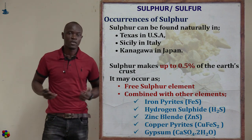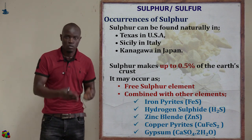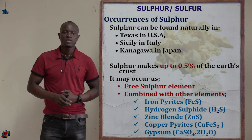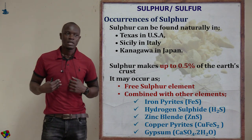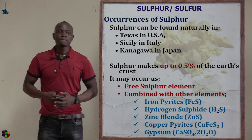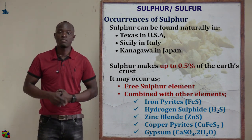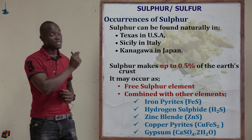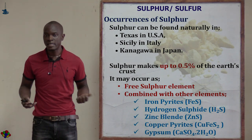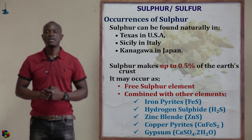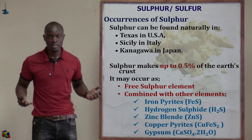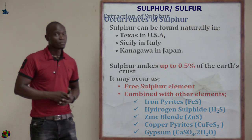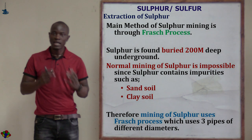Sulfur is mainly abundant in areas where volcanic activity is present. It can occur in a free element state or in a combined state — for example, in hydrogen sulfide, zinc blende (ZnS), iron pyrites, copper pyrites, and gypsum.